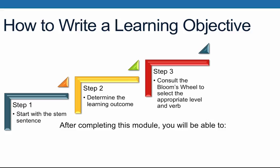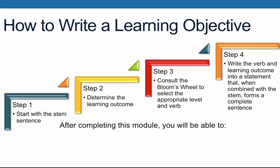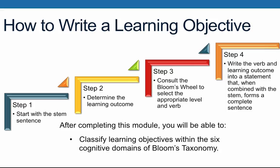So we are now ready to move on to step four, which is to write out our actual learning objective: 'Classify learning objectives within the six cognitive domains of Bloom's Taxonomy.' We now have a student-centered measurable learning objective that we can later use to design an activity, assessment, and related teaching strategies to be associated with this objective.